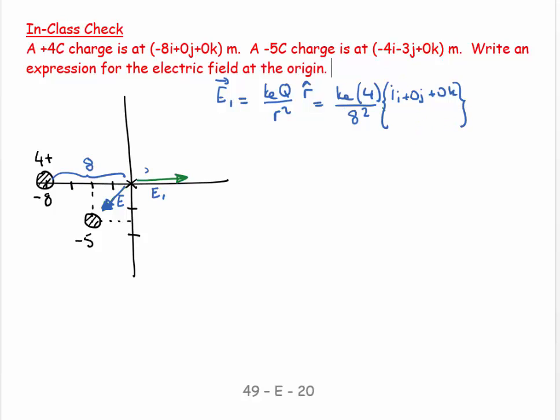So, I have a magnitude, which is KE Q over R squared. I know my KE, I know my Q for this first one is plus 4, or 4. And then the R squared, well, I know the R is 8, so I've got to square that. Then the direction, I visualize a unit vector pointing in the direction I want it to point horizontally. And the unit vector for that is 1i plus 0j plus 0k, because that is a unit vector pointing in the positive direction along the x-axis.